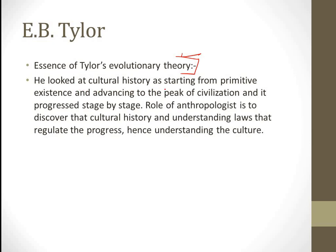The essence of E.B. Tylor's evolutionary theory: He looked at cultural history as starting from primitive existence and advancing to the peak of civilization, advancing gradually stage by stage. There were stages of advancement.